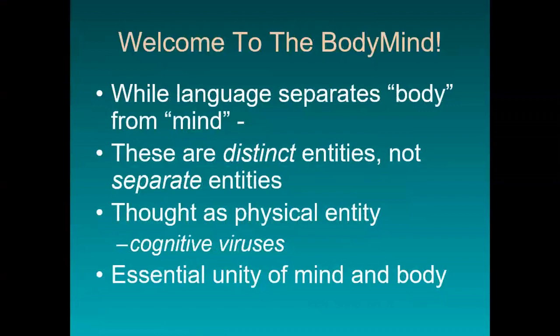Welcome to the body-mind. Speaking of distortions, the language that we use when we speak of mental health versus physical health gives us a distorted view of this phenomena. For while language separates body from mind, these are distinct entities, never separate entities. Thought itself is a physical entity — it's a nerve impulse, an electrochemical wave in the brain. Cognitive science has coined a new term for unnatural thoughts: cognitive viruses. These thoughts are called viruses because they trigger the immune system and create inflammation in the body, just as the COVID virus would.